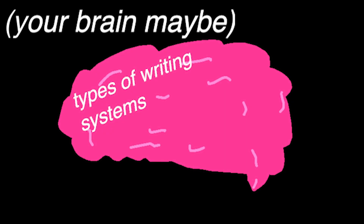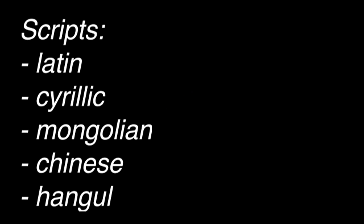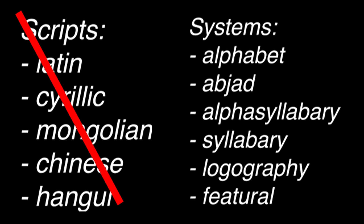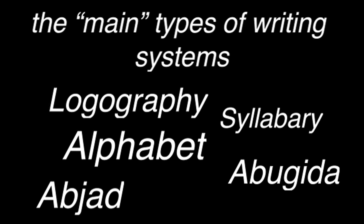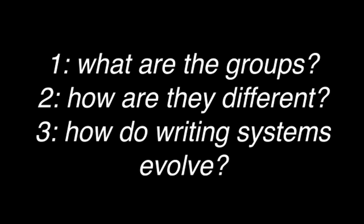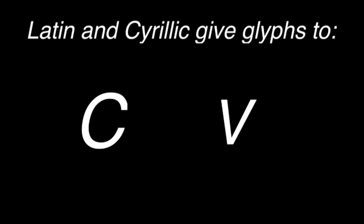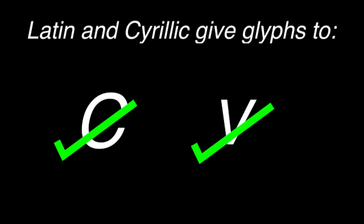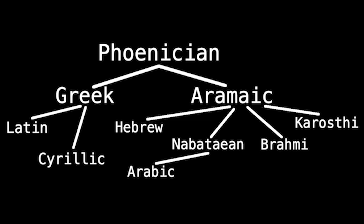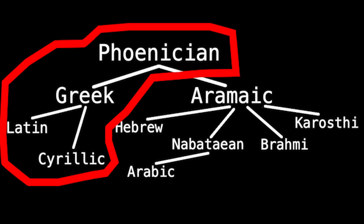If you don't know much about this topic, you might not know very much about the types of writing systems. I'm not talking about the types of scripts as in Latin, Chinese, and Mongolian — I'm talking about the systems they use. Most writing systems can be classed into five main groups. First, you might speak an Indo-European language, in which case you may write with the Latin or Cyrillic scripts. This type of script, which gives glyphs to both consonants and vowels, is called an alphabet.